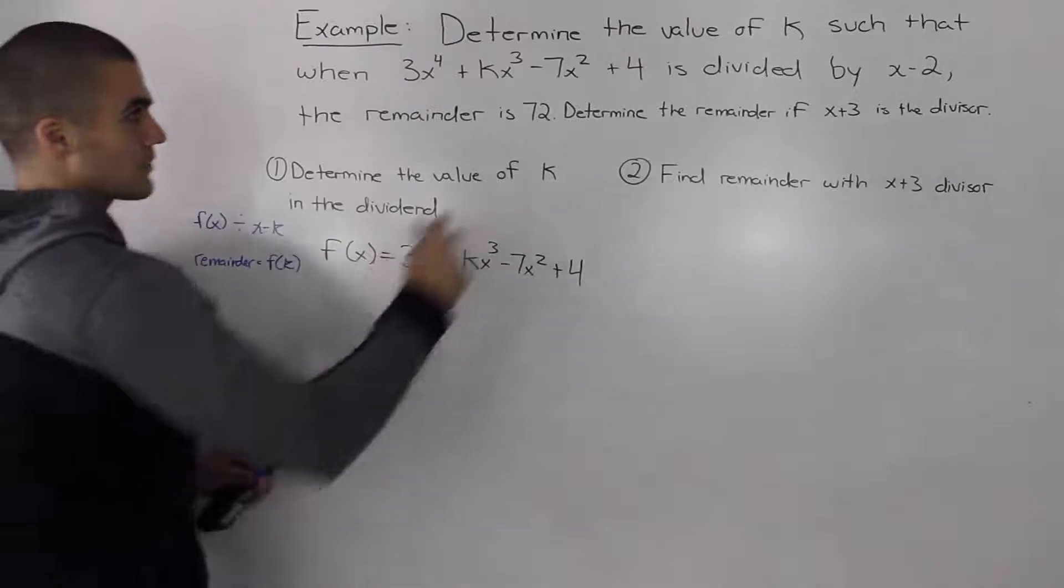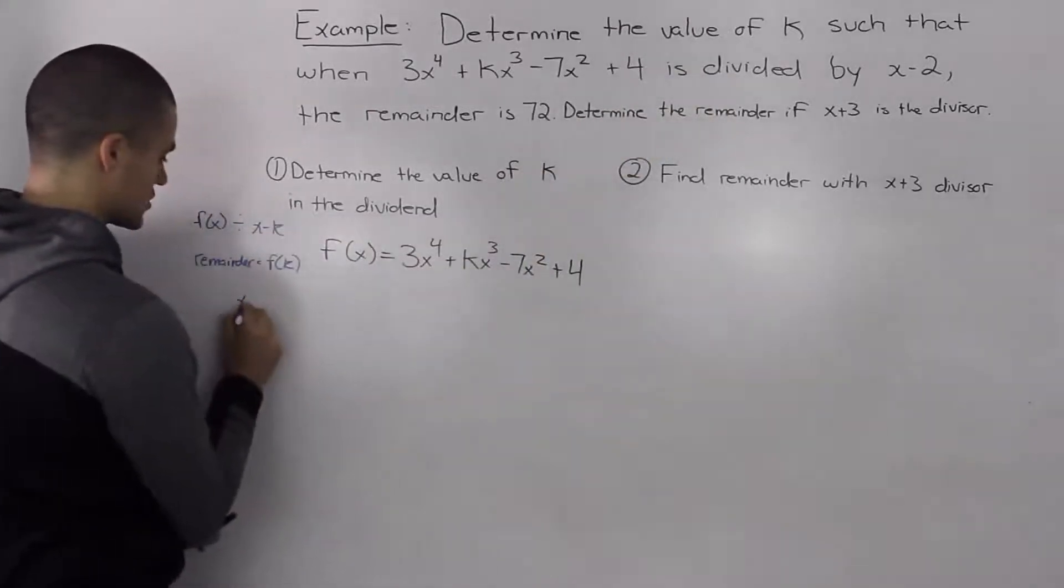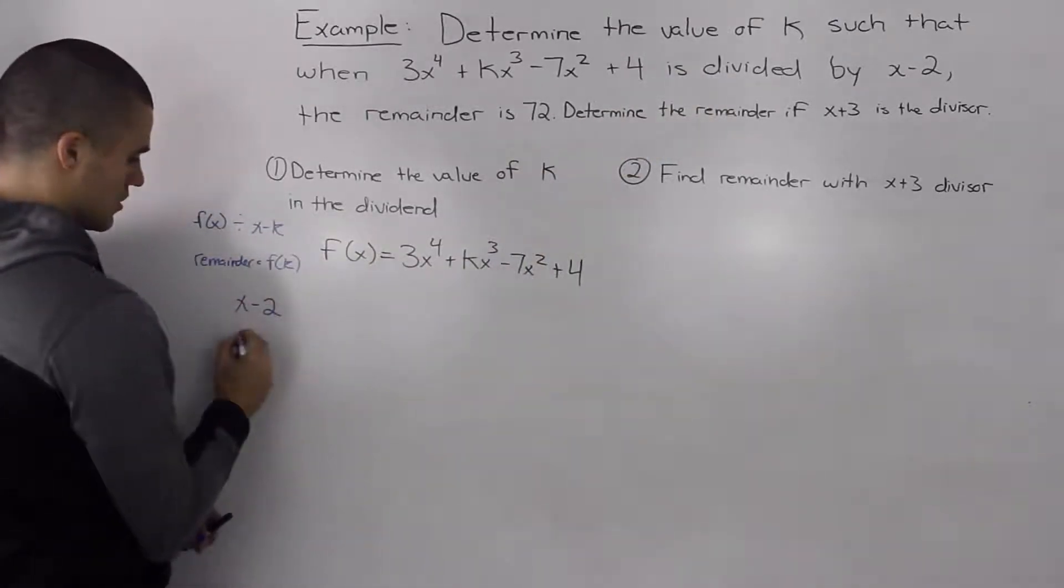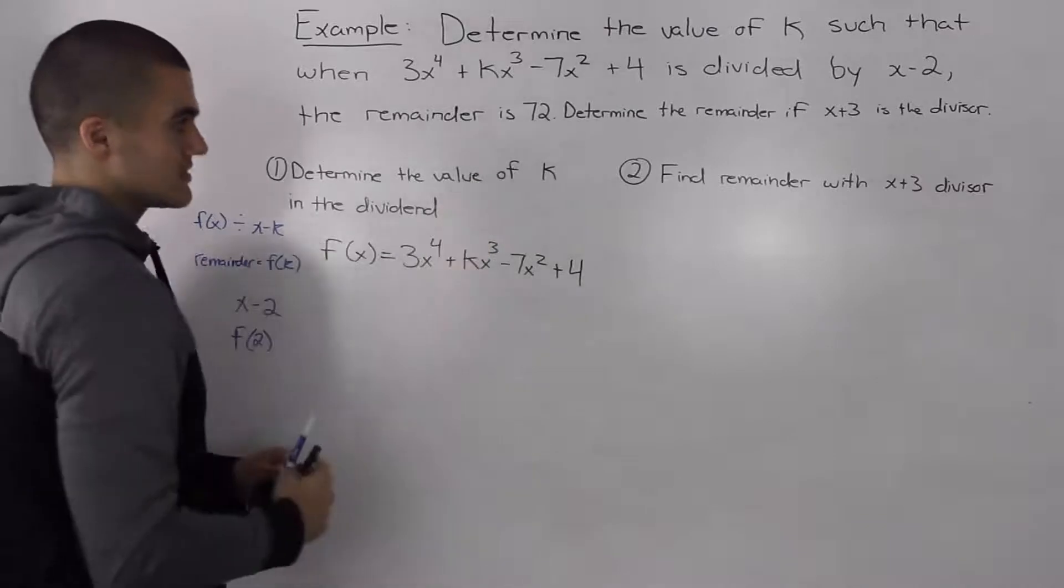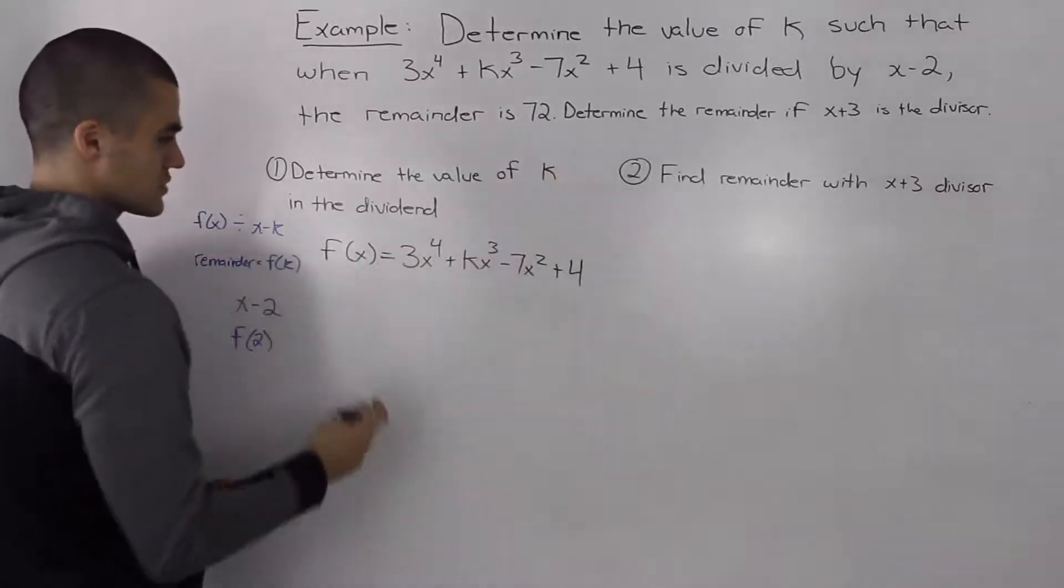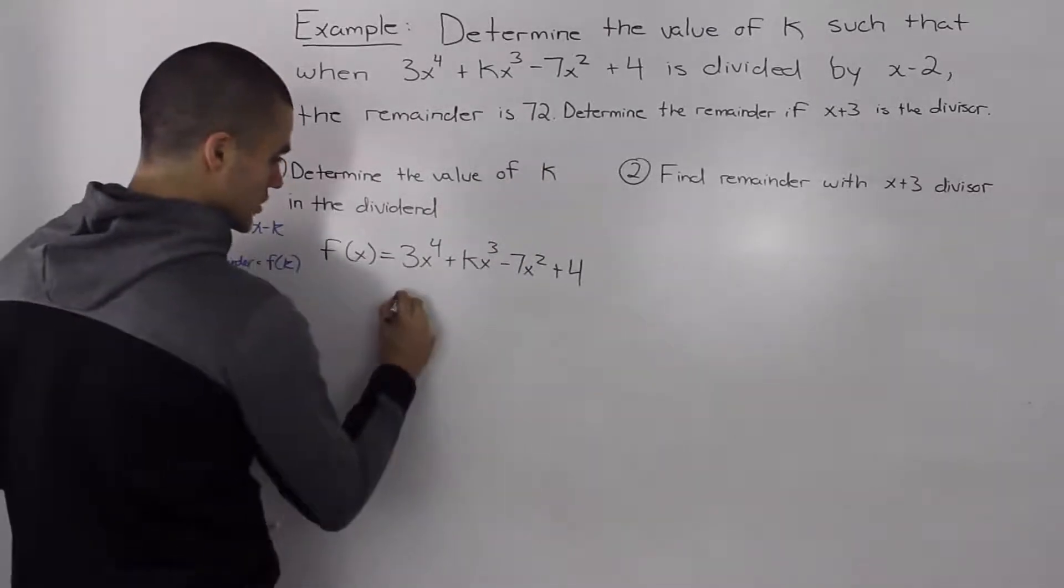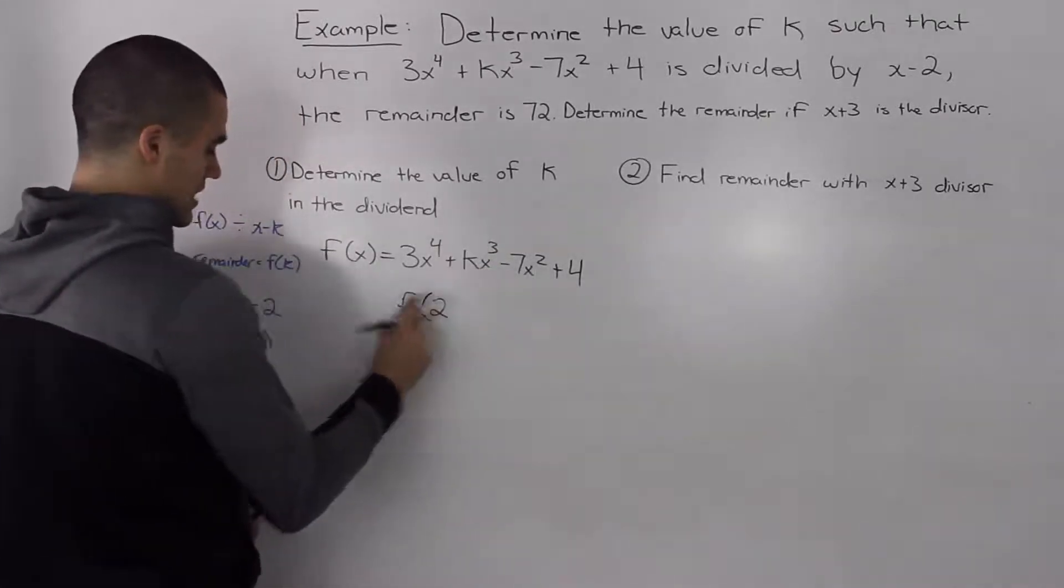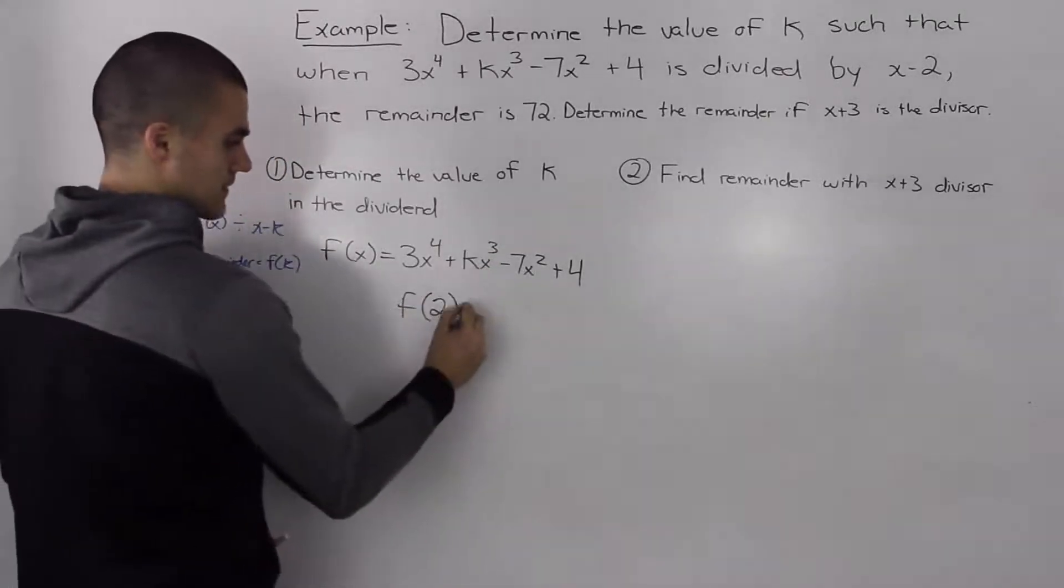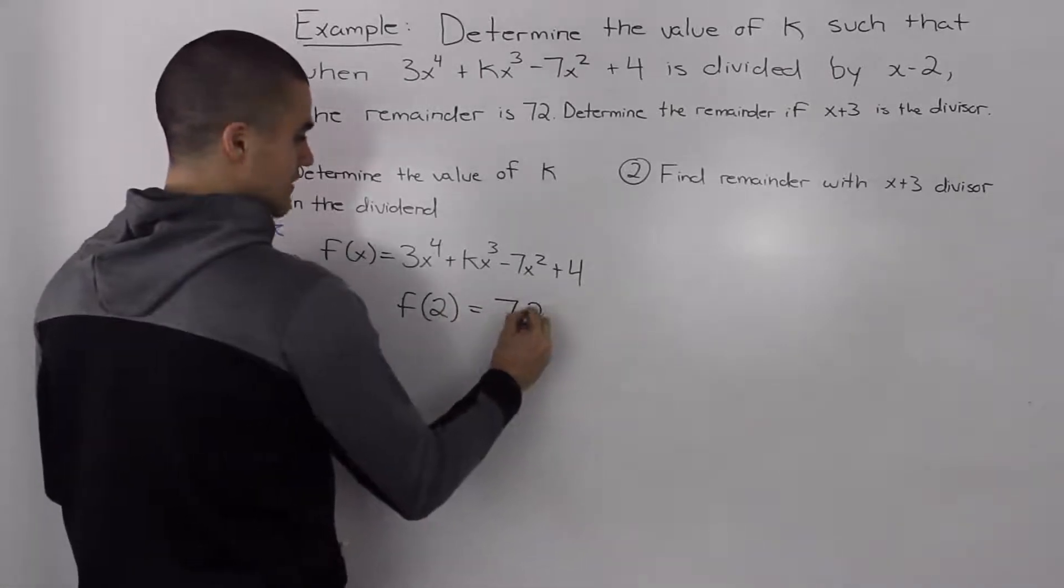So in our case, what's our divisor? Our divisor is x minus 2. So that means that the remainder would equal f of 2 and we are given that the remainder is 72 and the divisor is x minus 2. So we can make an equation saying that f of the k value, which is 2 in this case, is equal to 72.